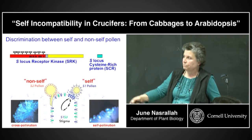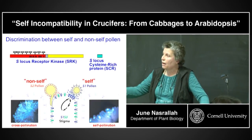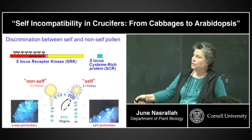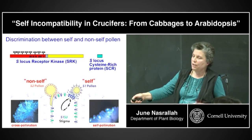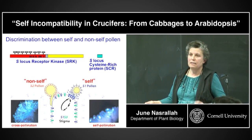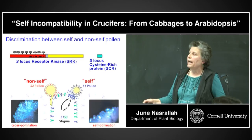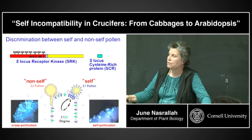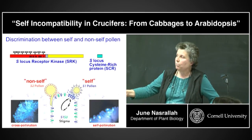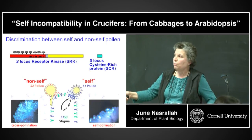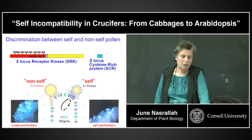The pollen hydrates and germinates in a cross-pollination event, resulting in profuse pollen tube growth. A key point is that a single stigma epidermal cell can inhibit self-pollen while allowing growth of non-self pollen. Whatever this response is, the signaling within the cytoplasm has to be very localized to the site of pollen-stigma epidermal cell interaction.